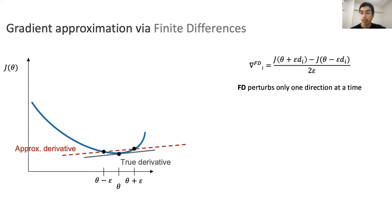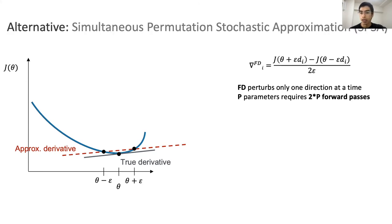Finite differences perturbs only one direction at a time. And for a total of p parameters, it requires 2p function evaluations. This can be computationally expensive for even a small number of p, given that the function to be evaluated represents one or more audio effects.